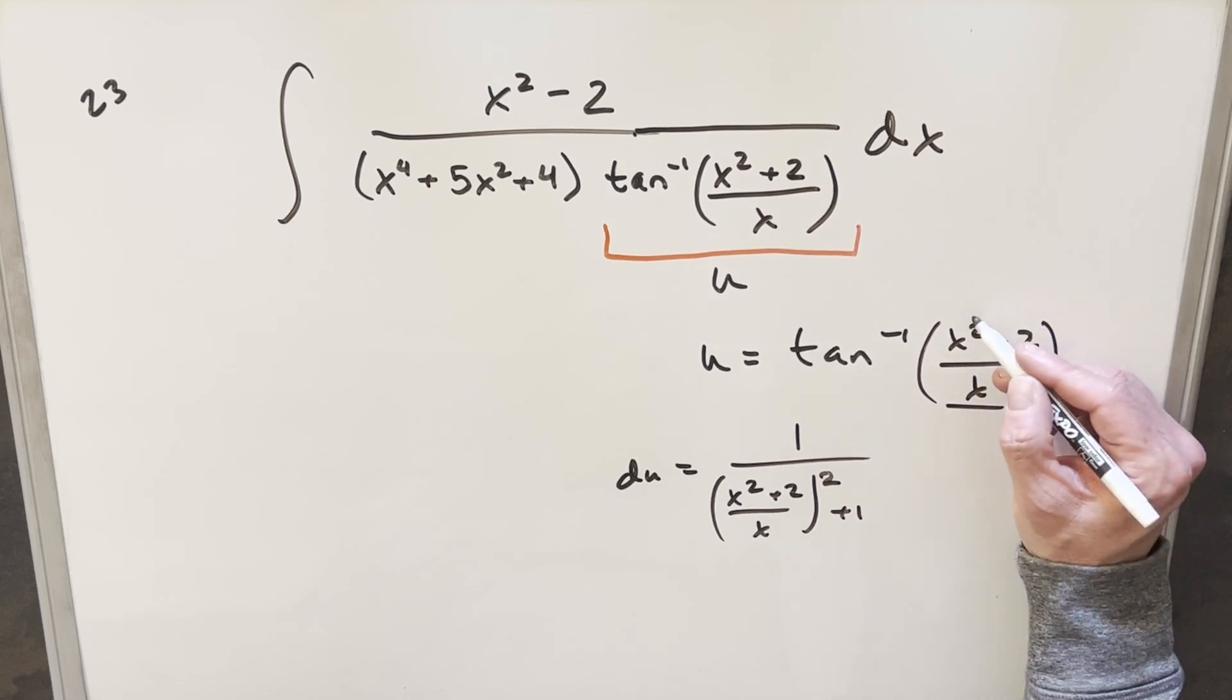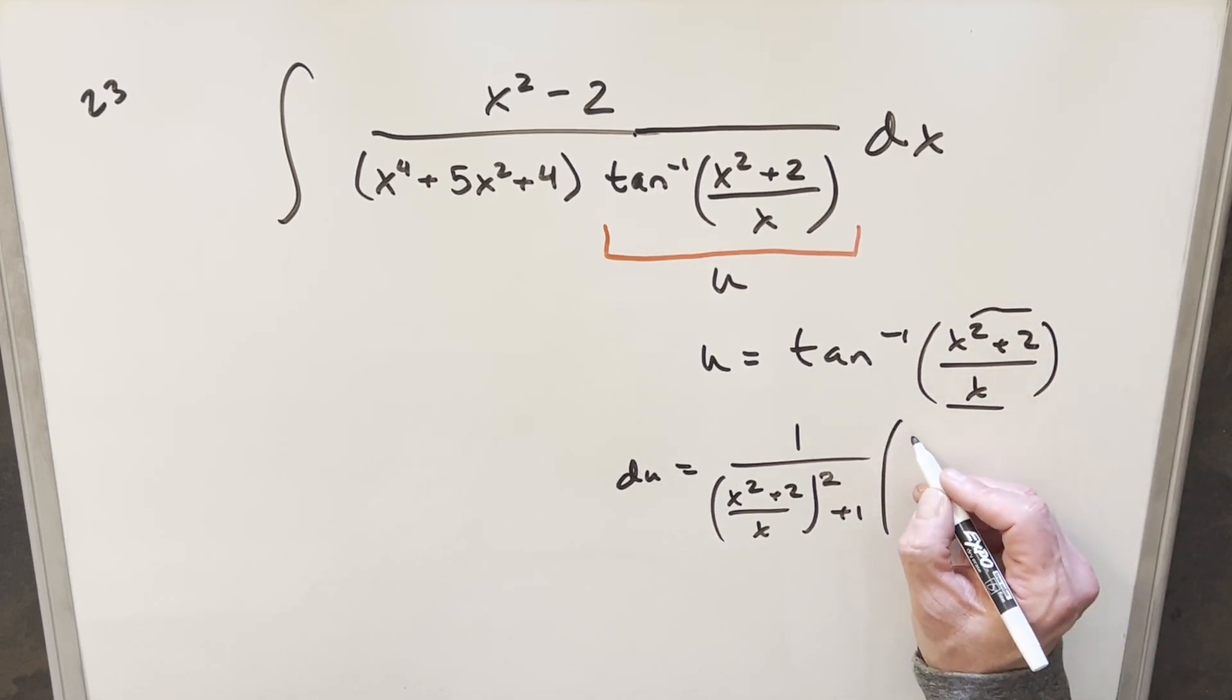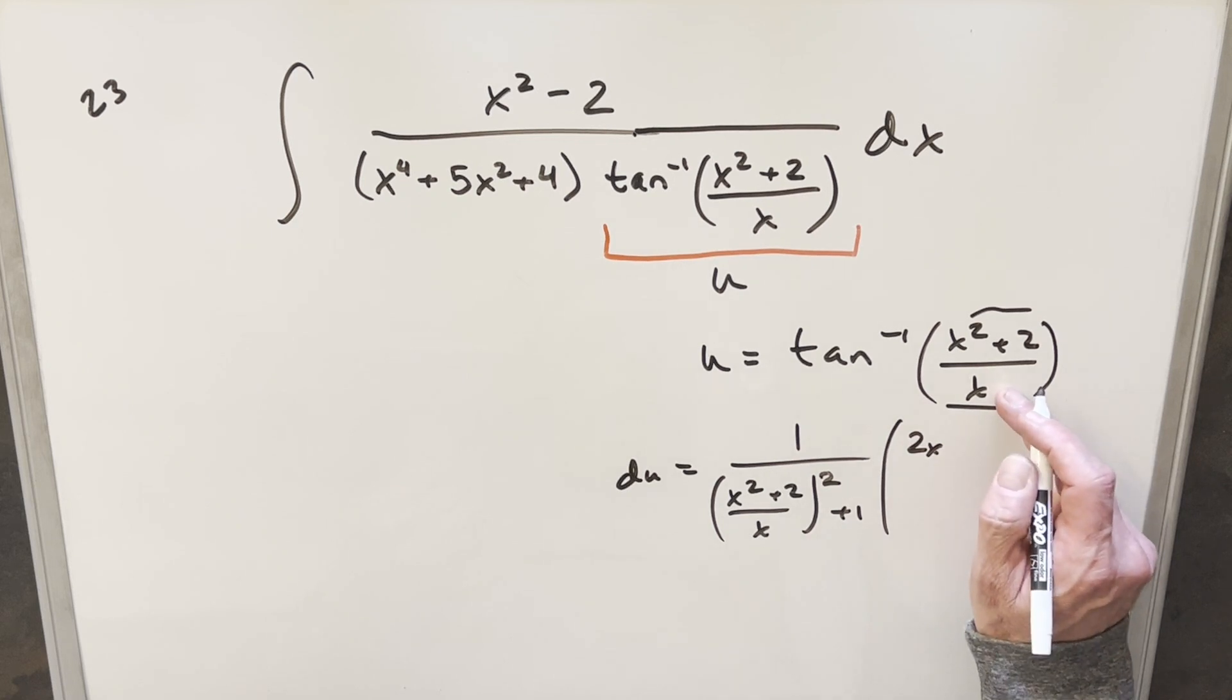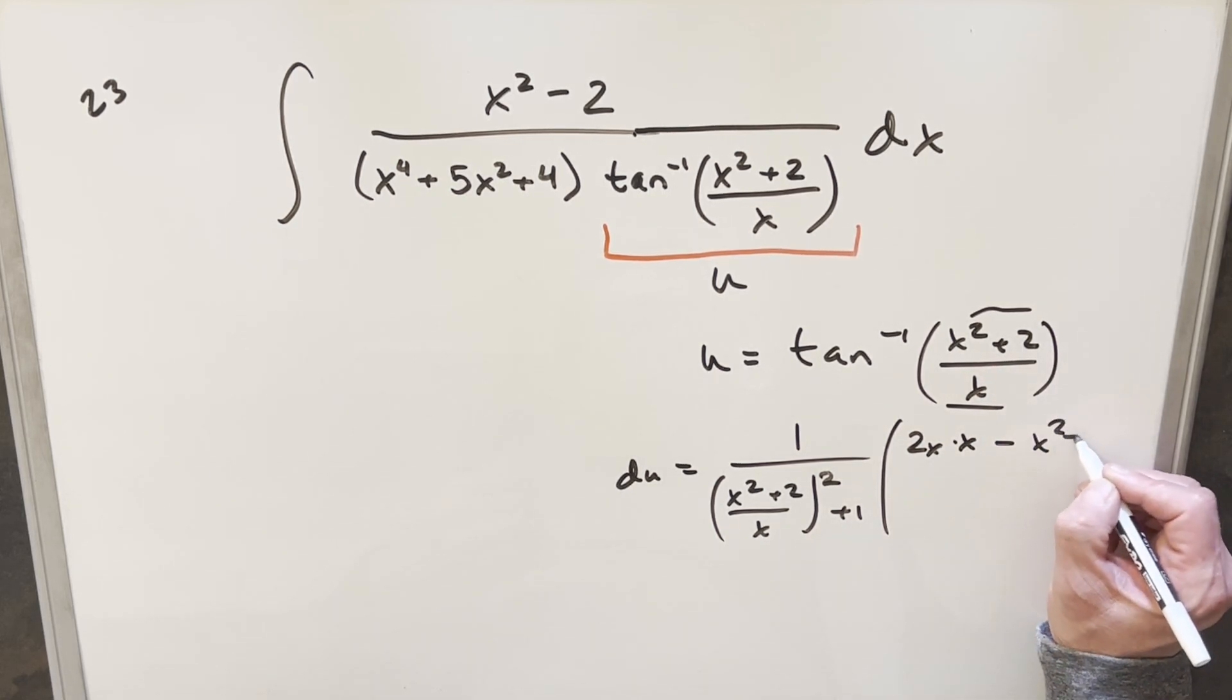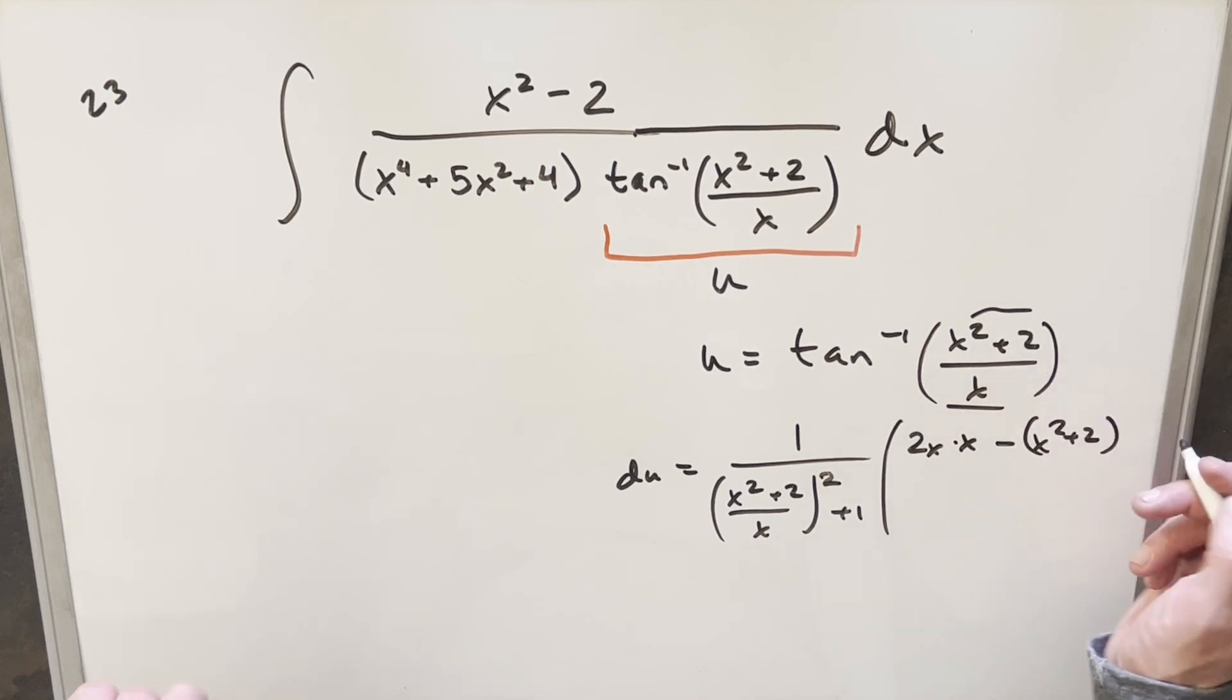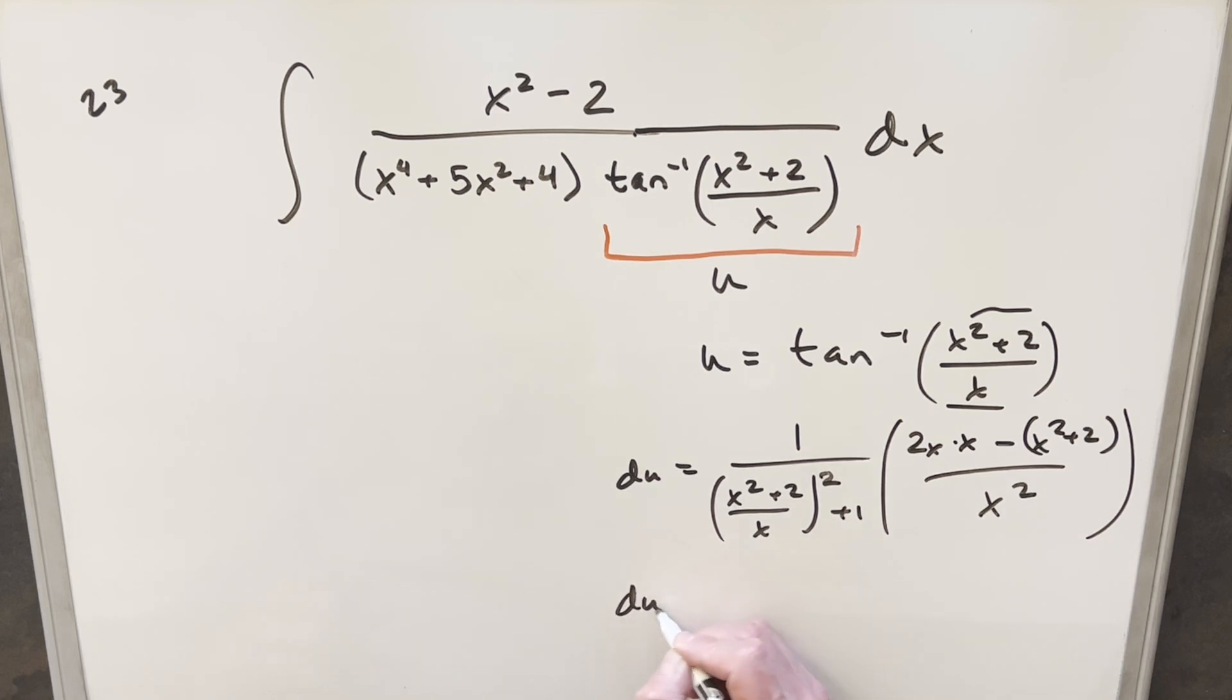So first, I need the derivative of x squared plus 2. That's going to give me 2x times the denominator, which is just x minus the numerator x squared plus 2 times the derivative of x. That's just 1, so we'll leave that off. And then here we take the denominator squared. And then I just need to simplify.